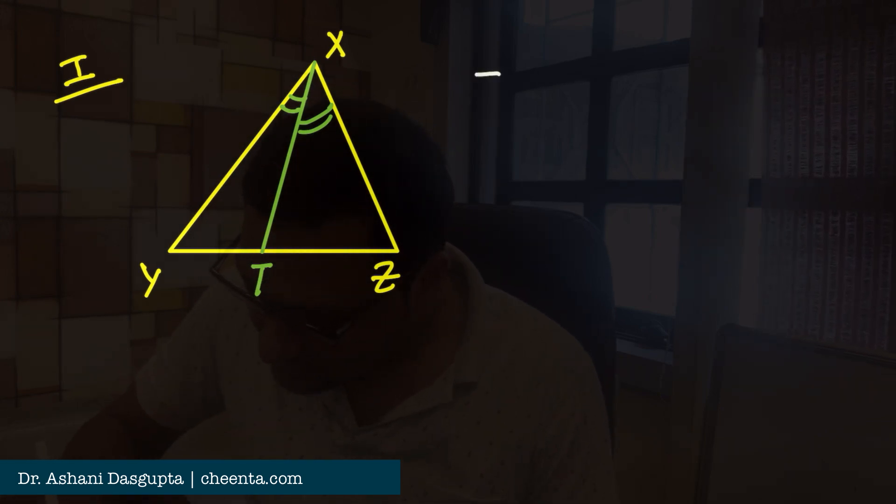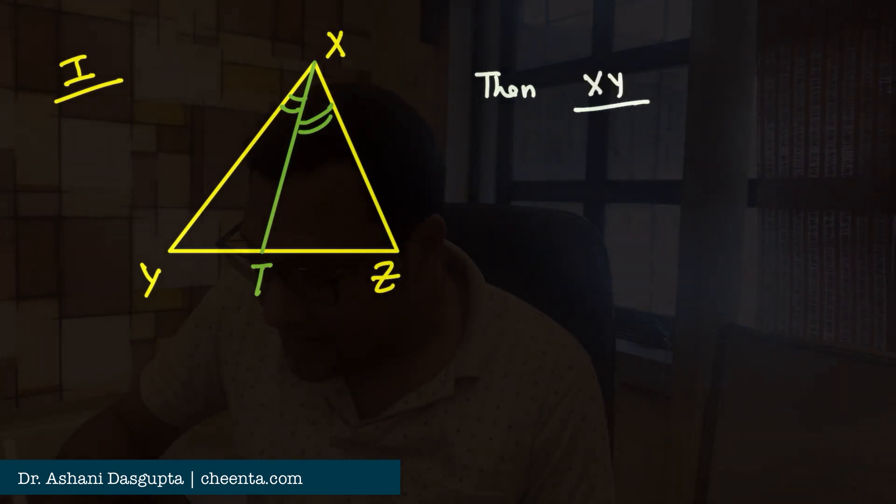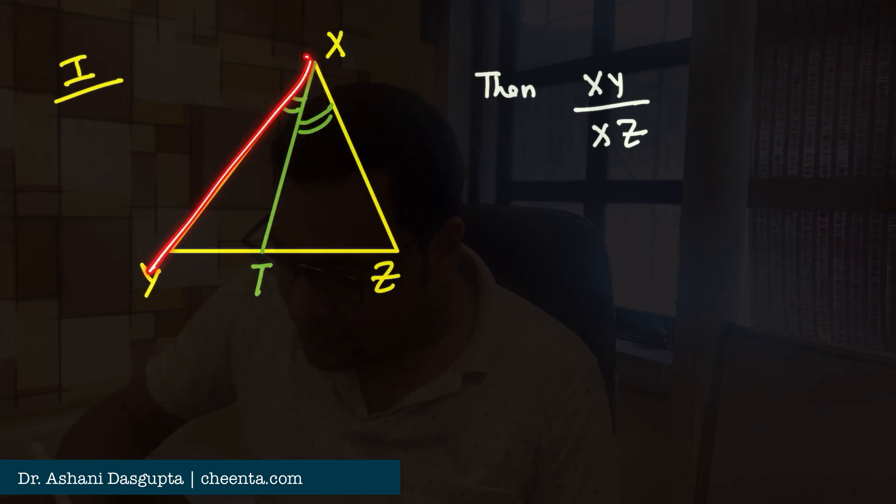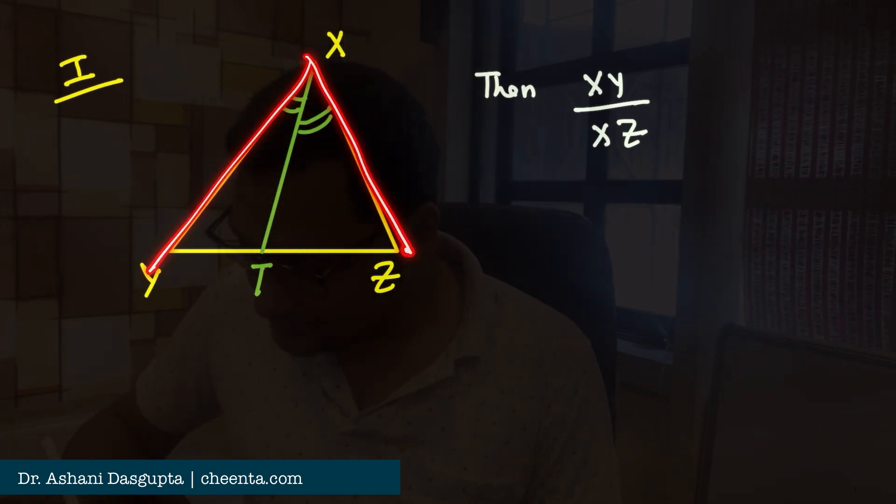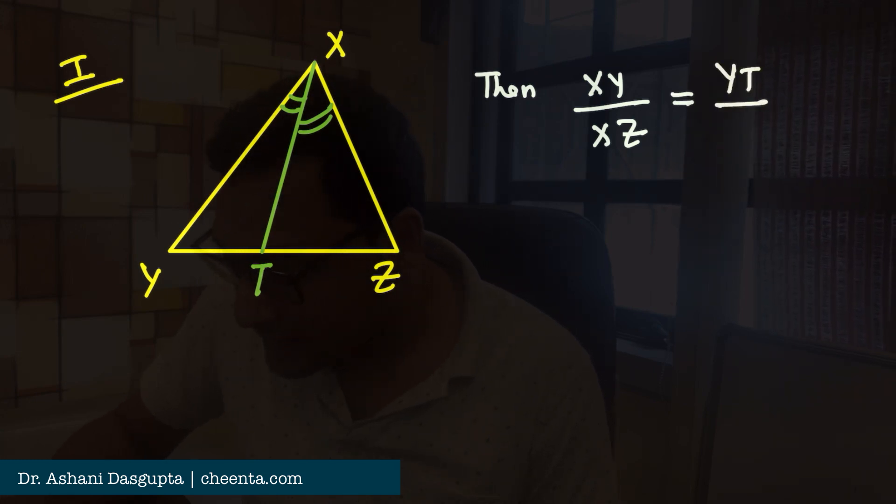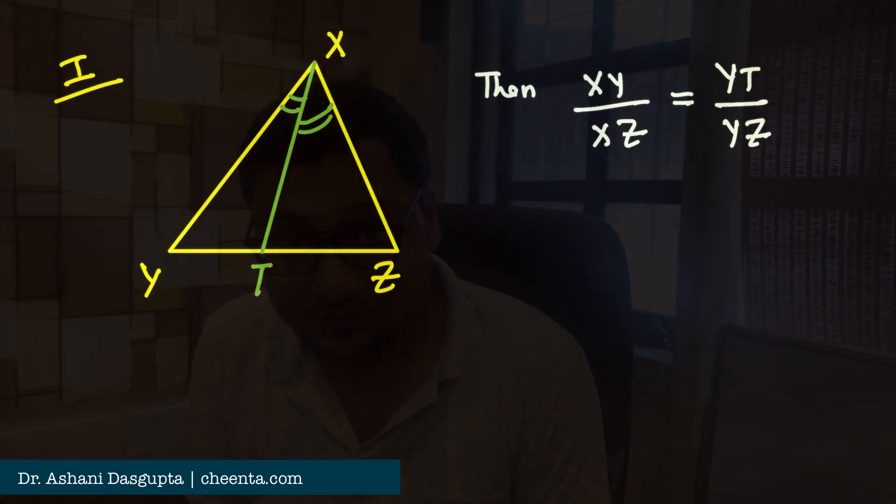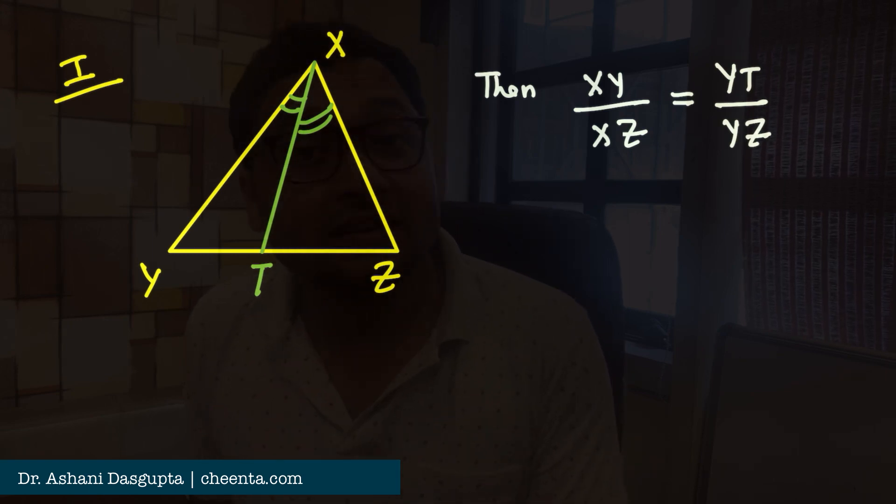XY by XZ, the length of XY divided by the length of XZ, is equal to YT by YZ. This is what the content of the angle bisector theorem is.